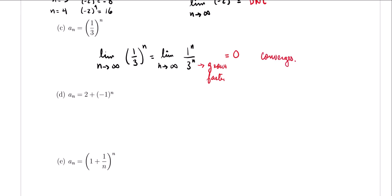What about the next one? This one is very similar to example b. You have negative 1 raised to the n. The limit does not exist, so the sequence diverges.